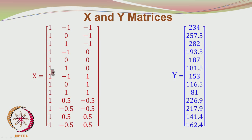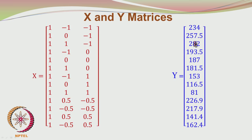The first column is the column of 1s, and the second column contains the coded temperature values: minus 1, 1, minus 1, 1, minus 1, 1, 0.5, minus 0.5, 0.5, 0.5, 0.5, 0.5, 0.5. The third column contains the coded powder values. All of them are coded, and the Y matrix represents the concentrations recorded at each experimental setting.